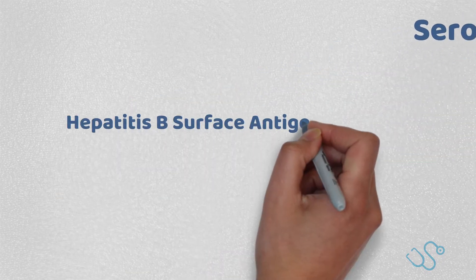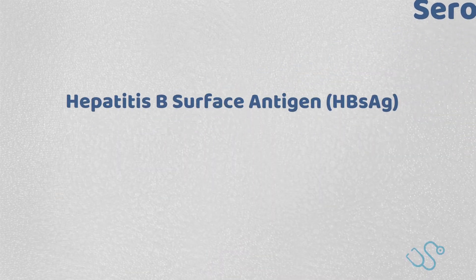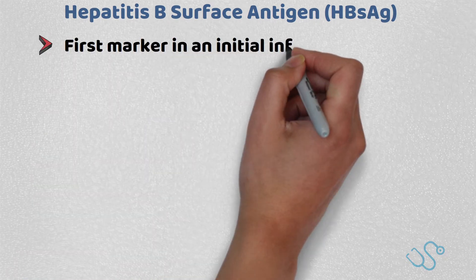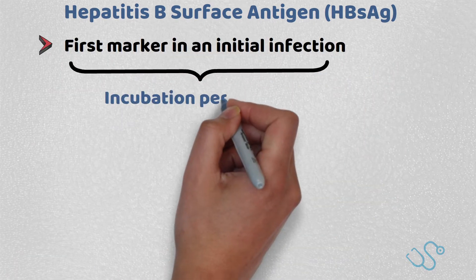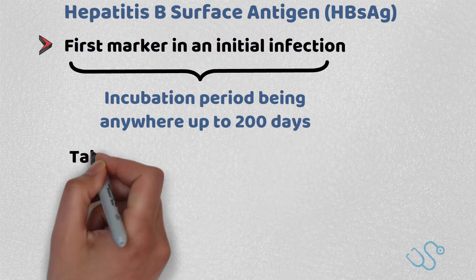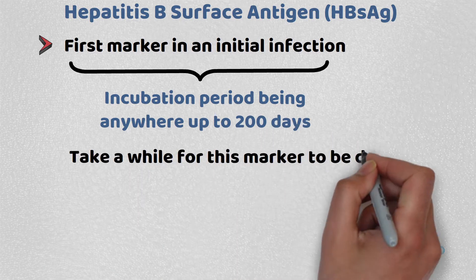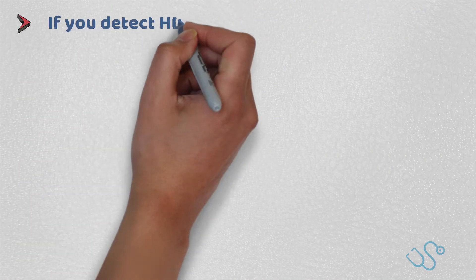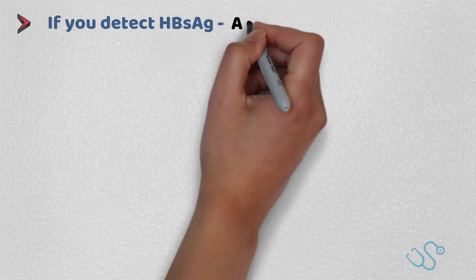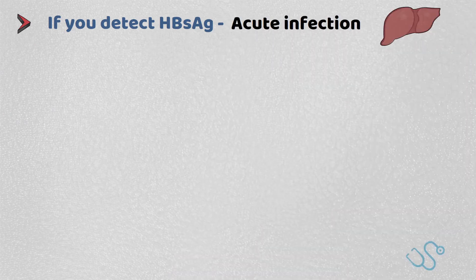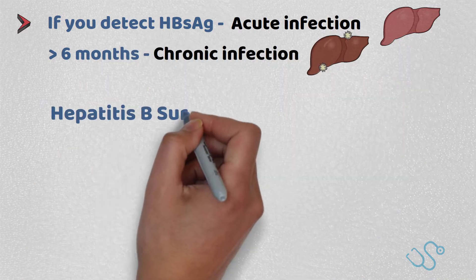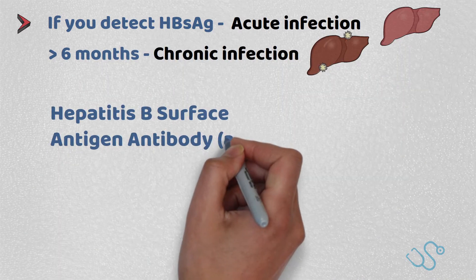Hepatitis B surface antigen. This is the first marker seen in an initial infection, but due to the incubation period being anywhere up to 200 days, it can take a while for the marker to be detectable. If you detect the Hepatitis B surface antigen it indicates an acute infection. However, if it's present for more than six months, this indicates a chronic infection.